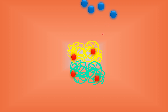So the Haldane effect is: when oxygen molecules bind to hemoglobin, carbon dioxide molecules are released. We can also state it another way: when the partial pressure of oxygen in the blood increases, the carbon dioxide molecules attached to hemoglobin are released, facilitating the transport of carbon dioxide.